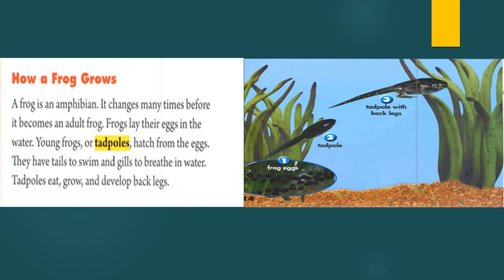Young frogs, or tadpoles, hatch from the eggs. Tadpoles have tails to swim and gills to breathe in water.